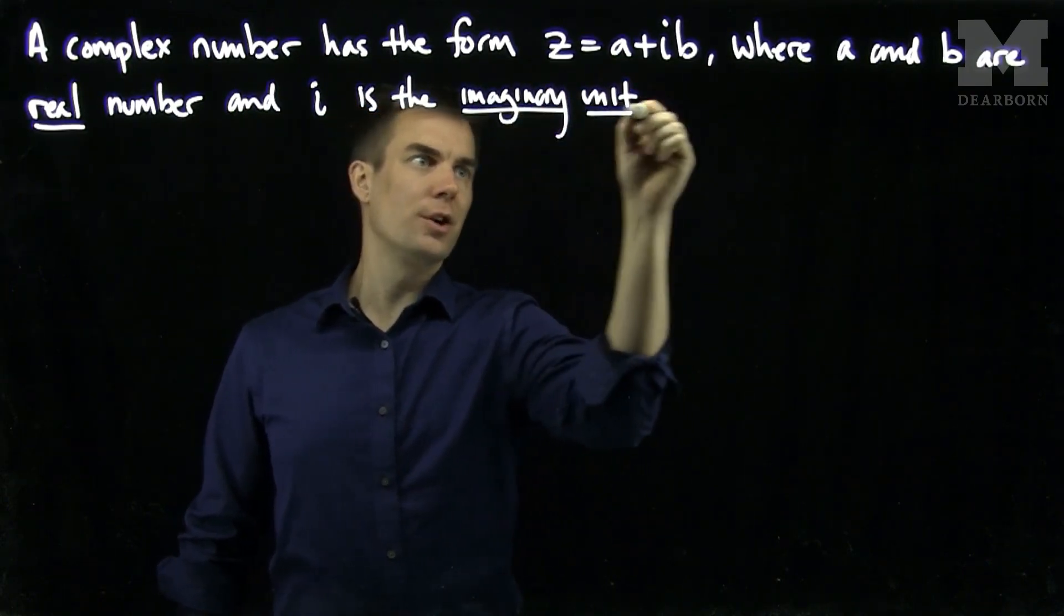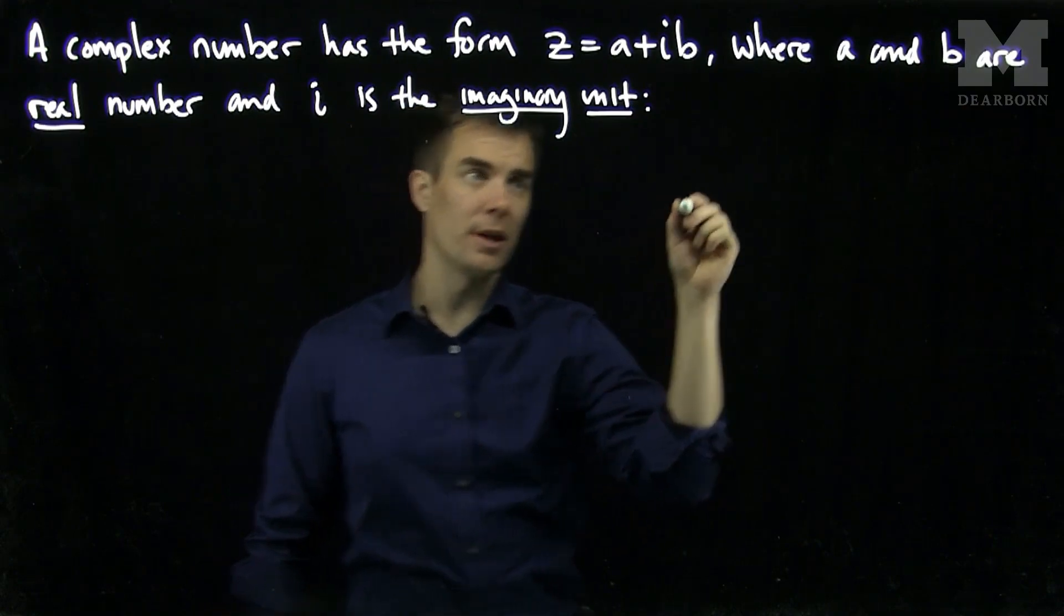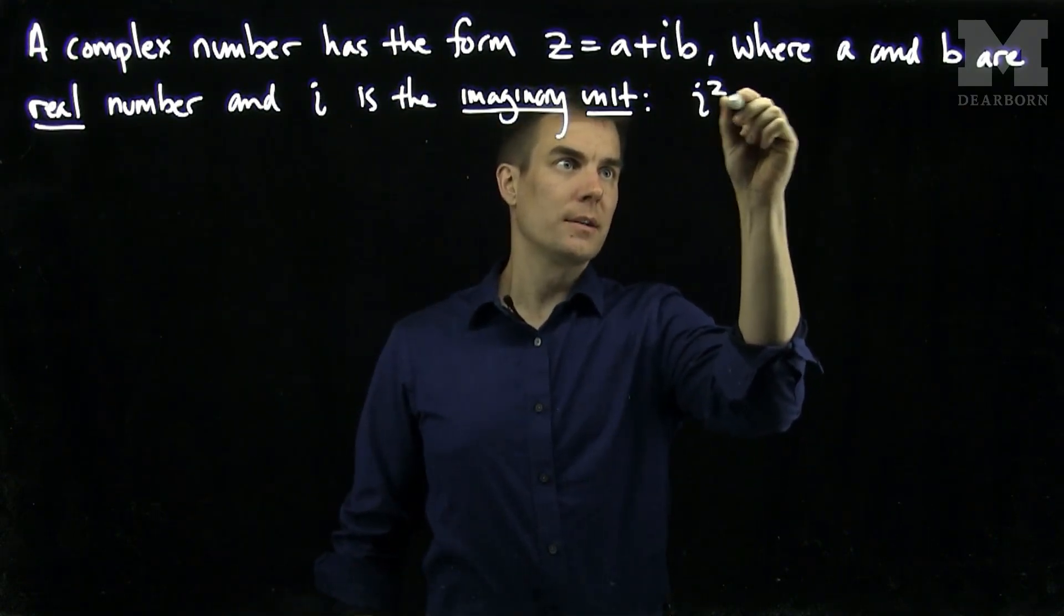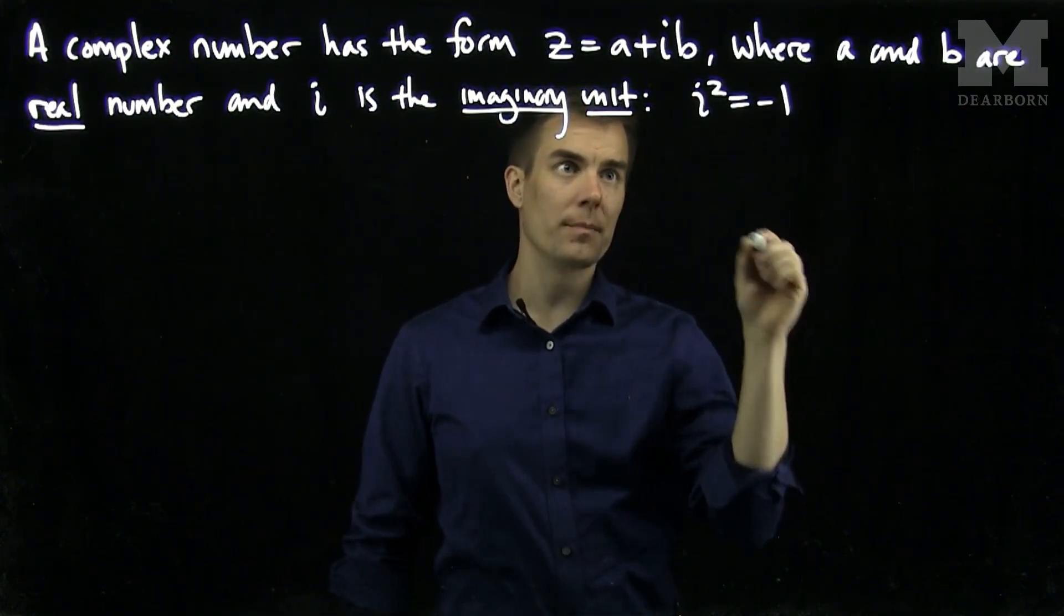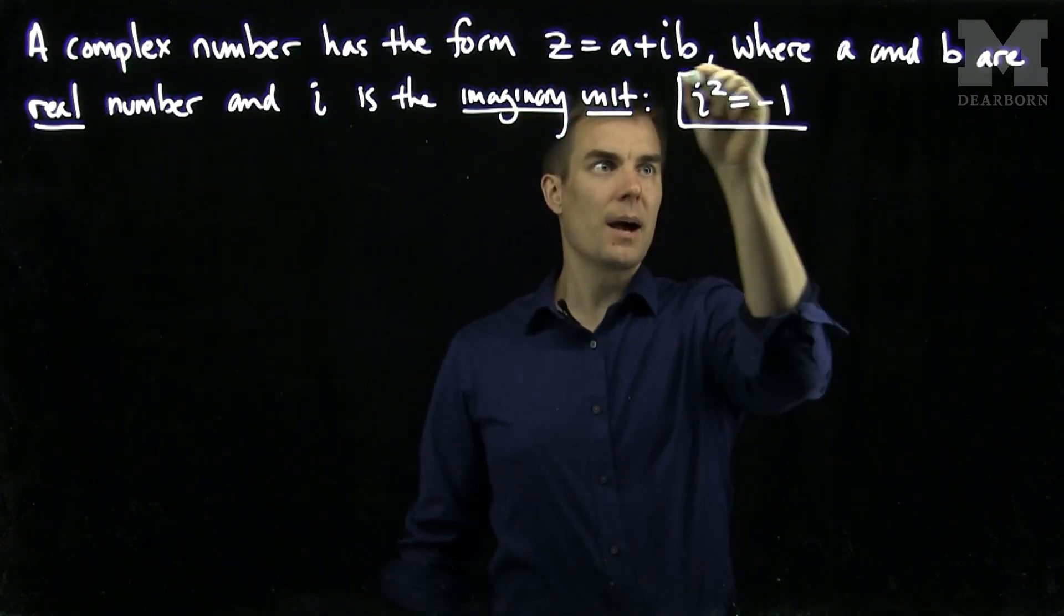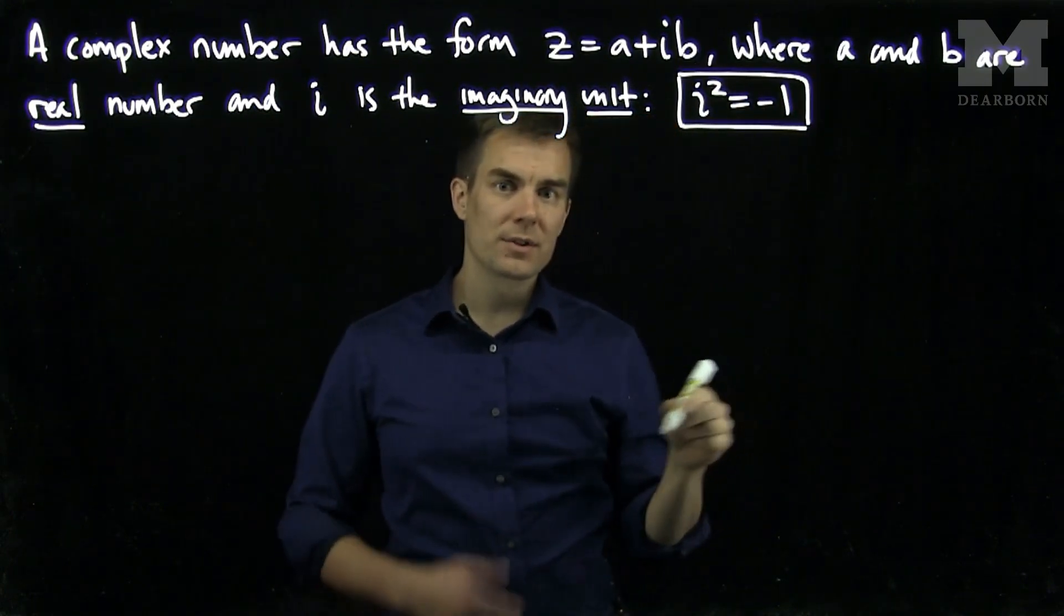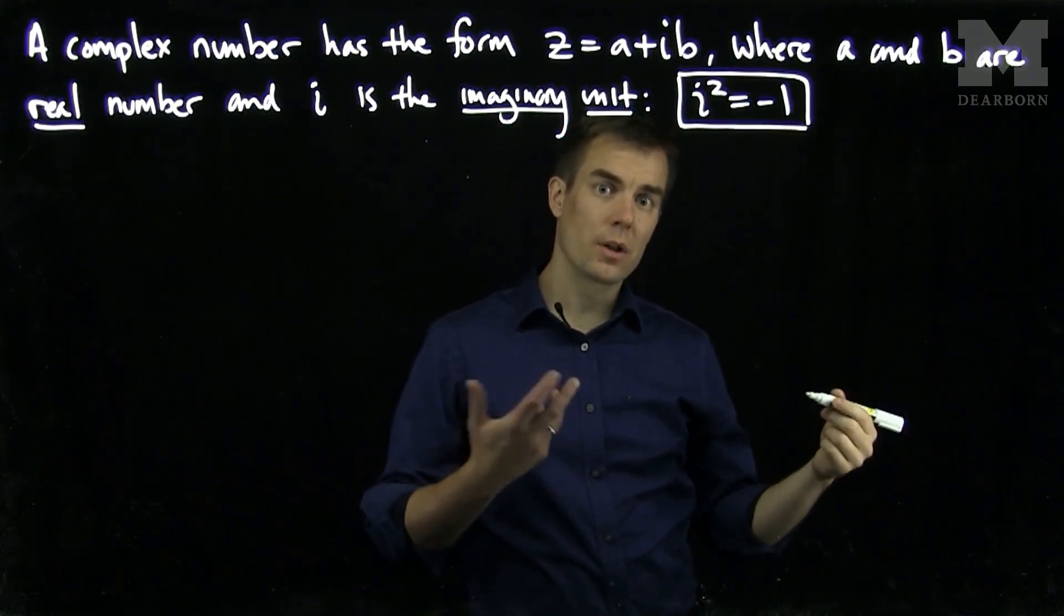This imaginary unit has the following property. When i square it, i get negative one. This complex structure gives us a new set of operations and a new collection of numbers.